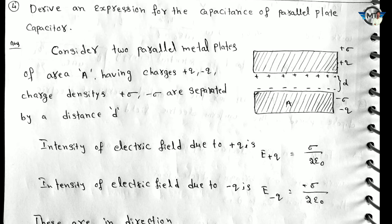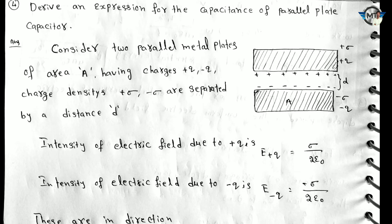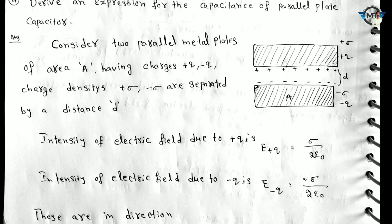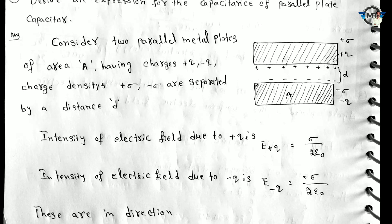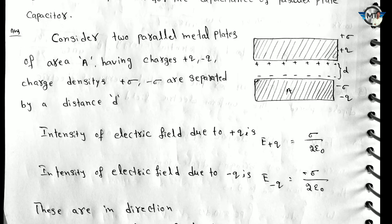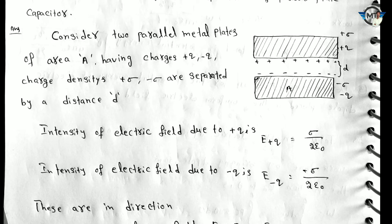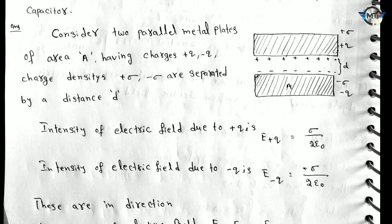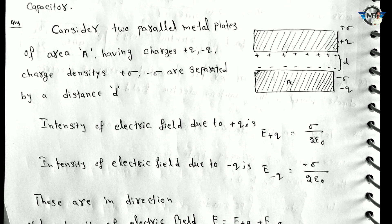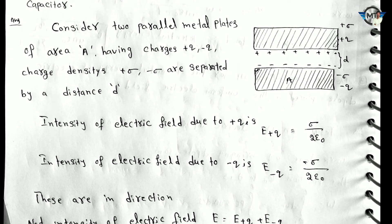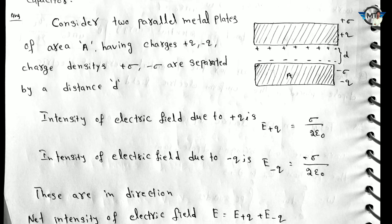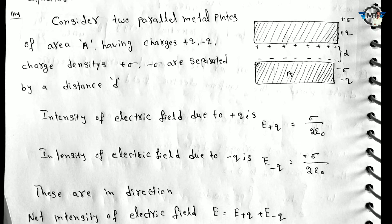Next question — this is very important and compulsory. This is a parallel plate capacitor question. The question is: Derive an expression for the capacitance of a parallel plate capacitor. Consider two parallel plates of area A. The charge is minus q and plus q, where plus sigma and minus sigma are separated by distance d. The intensity of electric field due to positive charge is E plus equals sigma by 2 epsilon naught.